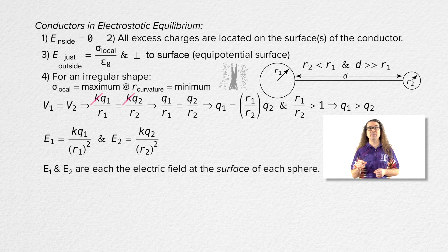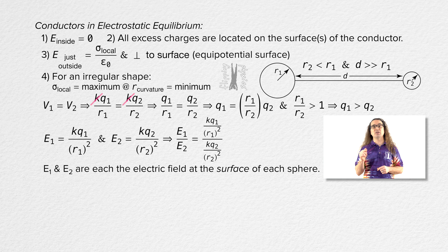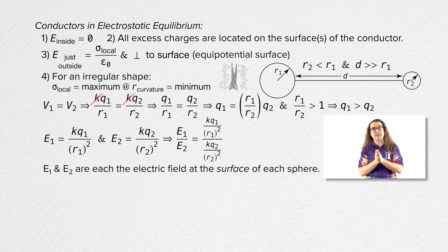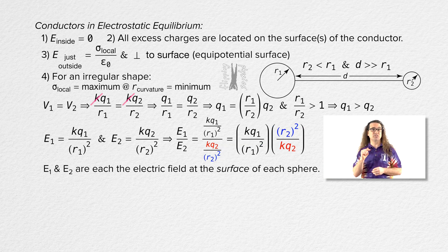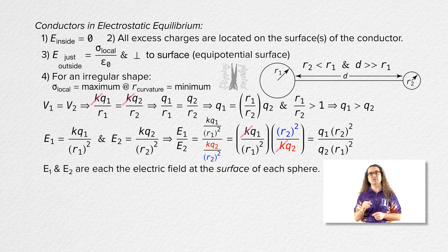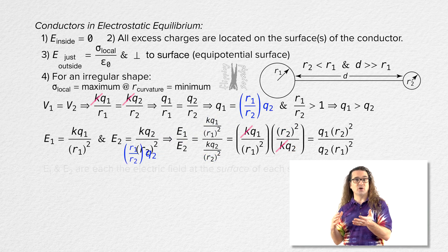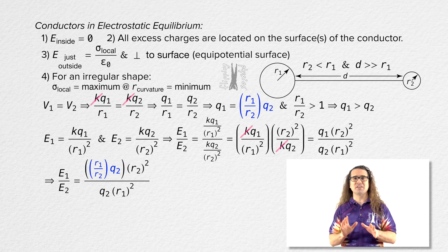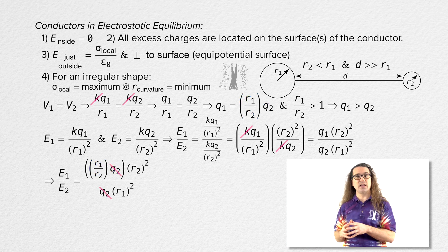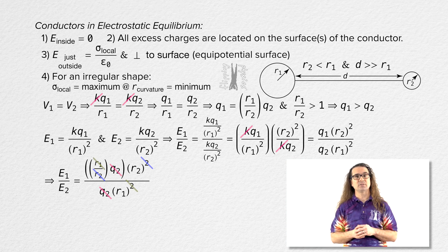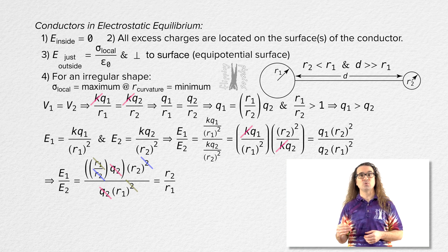The magnitude of the electric field at the surface of each sphere equals the Coulomb constant times charge divided by the square of the radius of the sphere. We can use those equations to get the ratio of the electric fields at the surface of each sphere, E1 over E2. We can simplify that equation by multiplying by the multiplicative inverse of the denominator. The Coulomb constant cancels out on the top and bottom. For charge 1, we can substitute in radius 1 over radius 2 times charge 2. And now a lot of variables cancel out: charge 2 cancels out, one of the radii for sphere 2 cancels out, and one of the radii for sphere 1 cancels out. And all we are left with is radius 2 over radius 1.